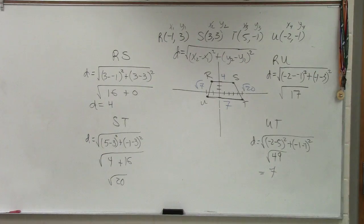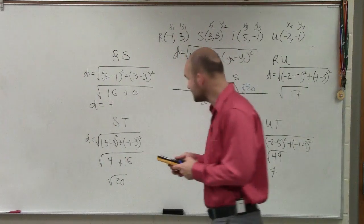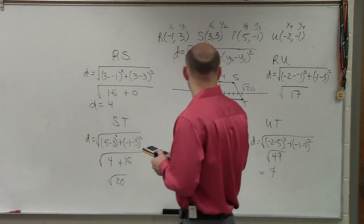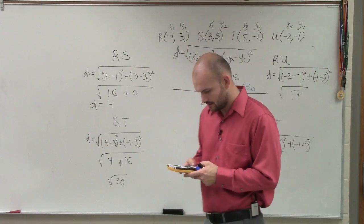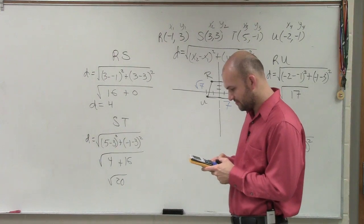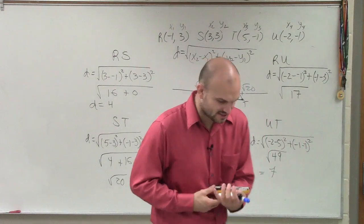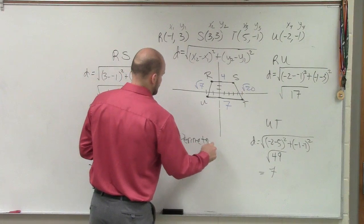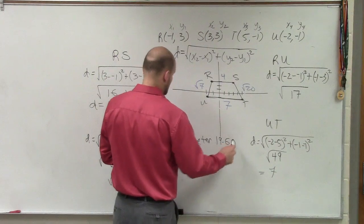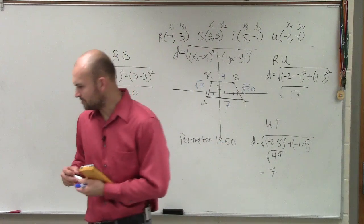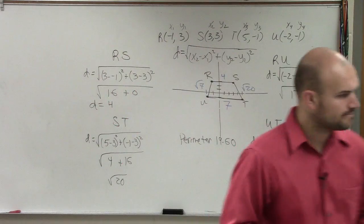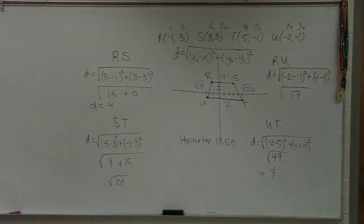So now, we can just take our lovely handy calculator. Because they asked us to do it to the nearest tenth. So I'll just do square root of 20 plus the square root of 17 plus 7 plus 4. And we have 19.60. So you can say the perimeter is 19.60. And they didn't give us any unit measures, so it's just going to be in units.